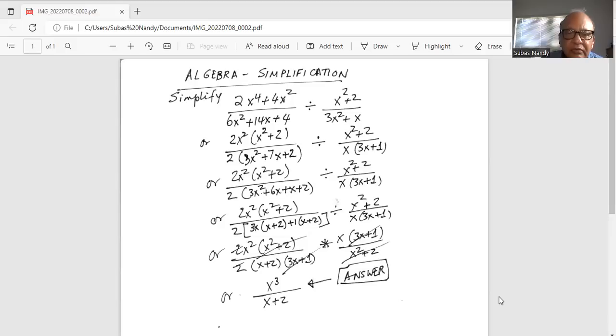So in the numerator, we still have 2x square times x square plus 2, and in the denominator, we have 2 outside the parenthesis. Inside the parenthesis,